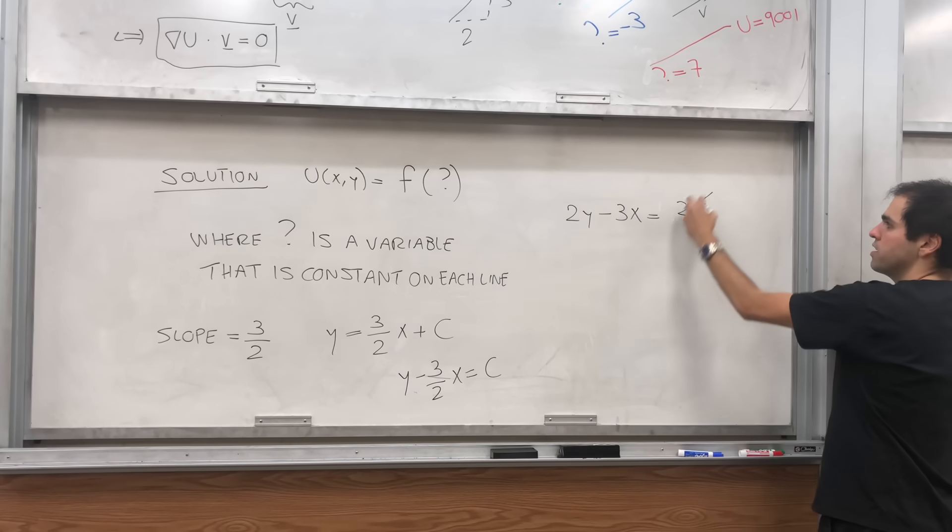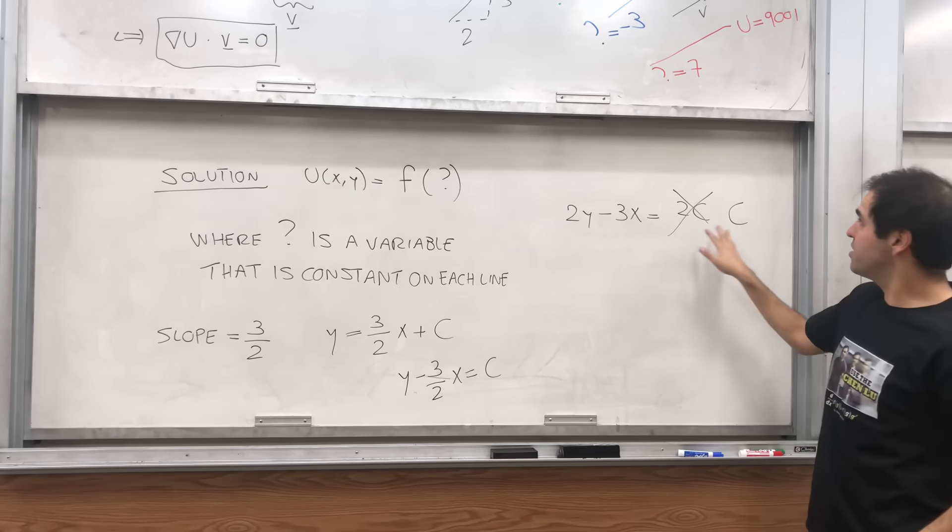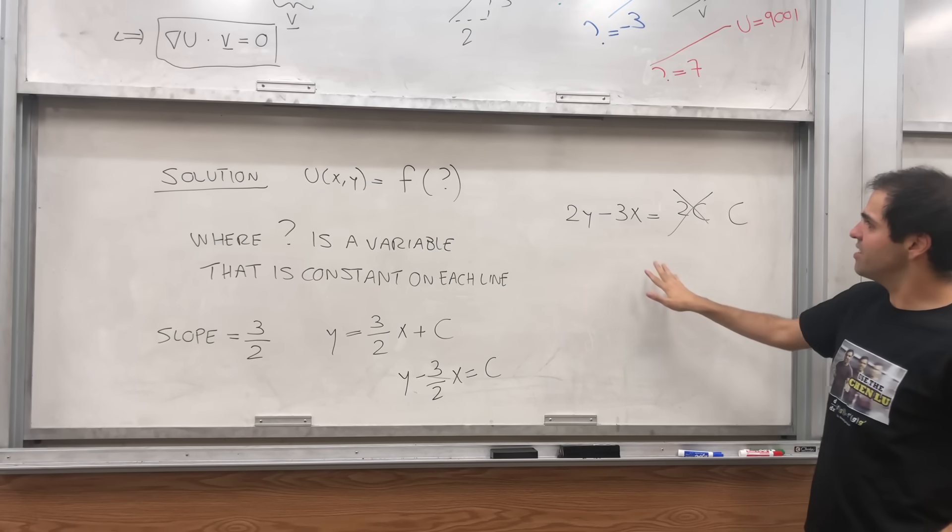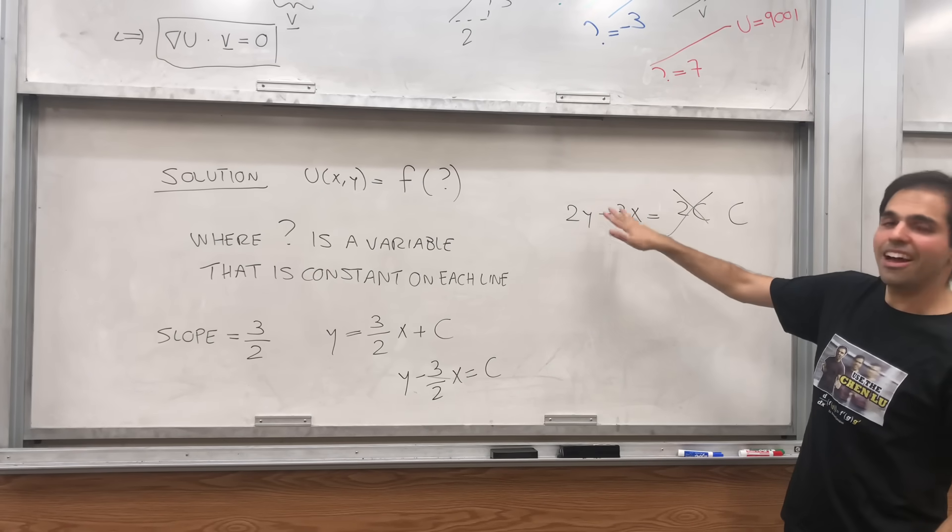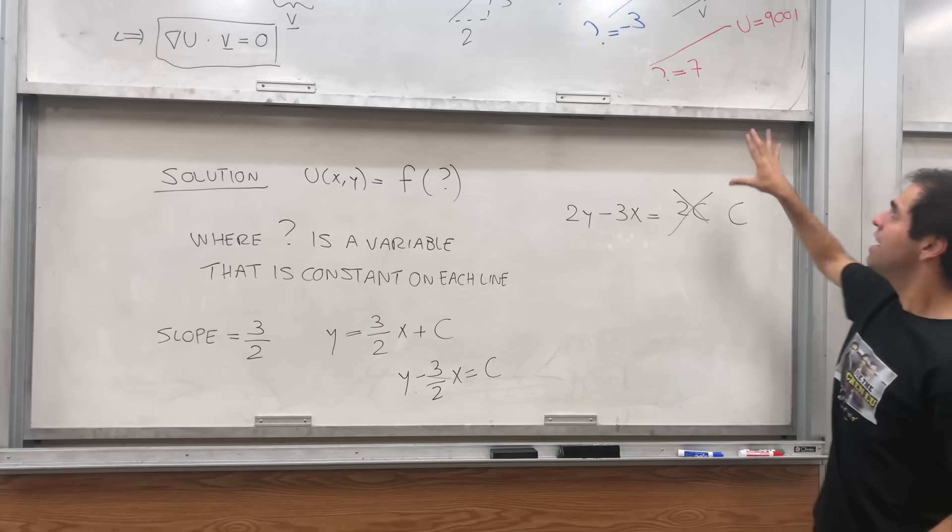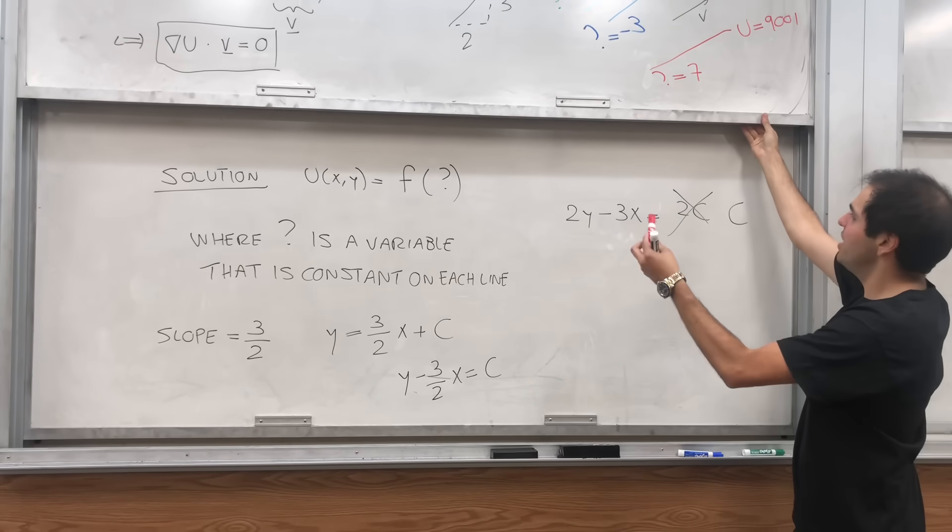And, in particular, what is this variable c? What is this constant c? What is this variable 2y minus 3x? It's a variable that is constant precisely on each line.